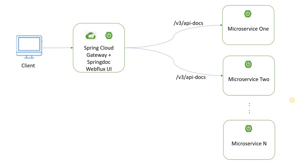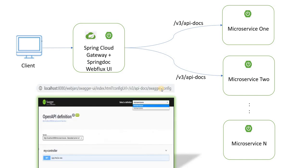That's all I had for the demo. Hope you enjoyed the video. We saw how each microservice exposed the API at /v3/api-docs and the central Swagger UI aggregated all the API definitions to show on the browser, where each microservice is listed in the dropdown. Thanks for watching the video. Do subscribe to my channel if you liked it and like the video if you enjoyed it. Thank you, have a good day. Bye.